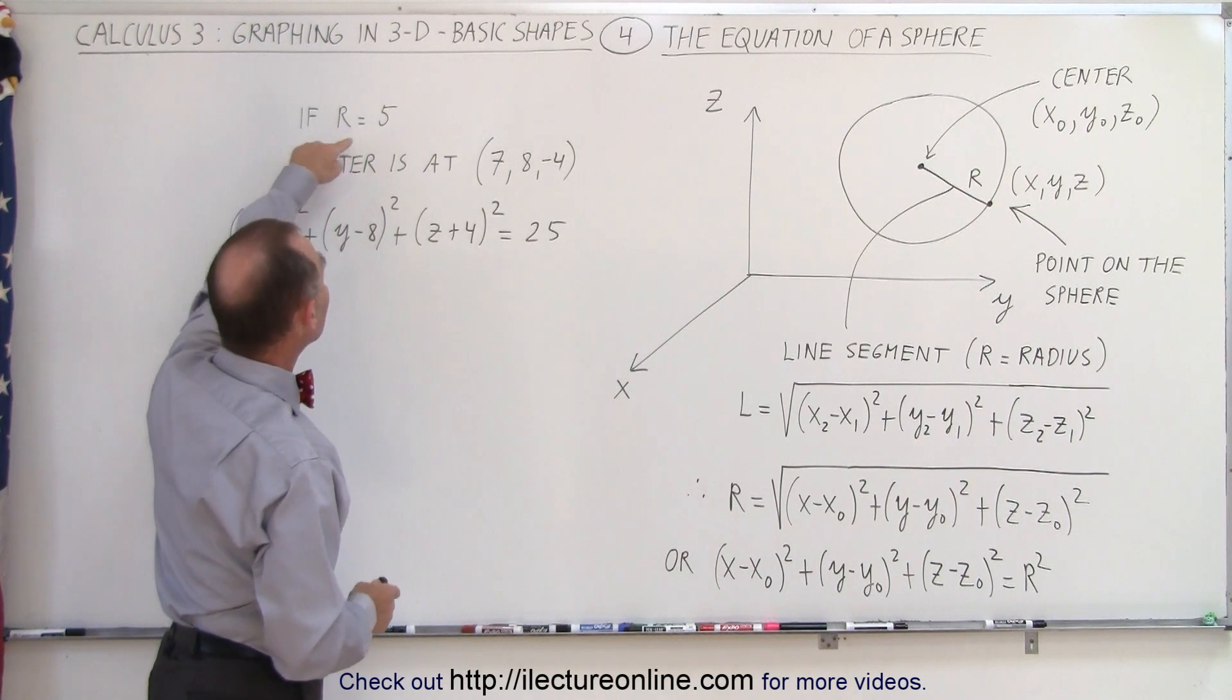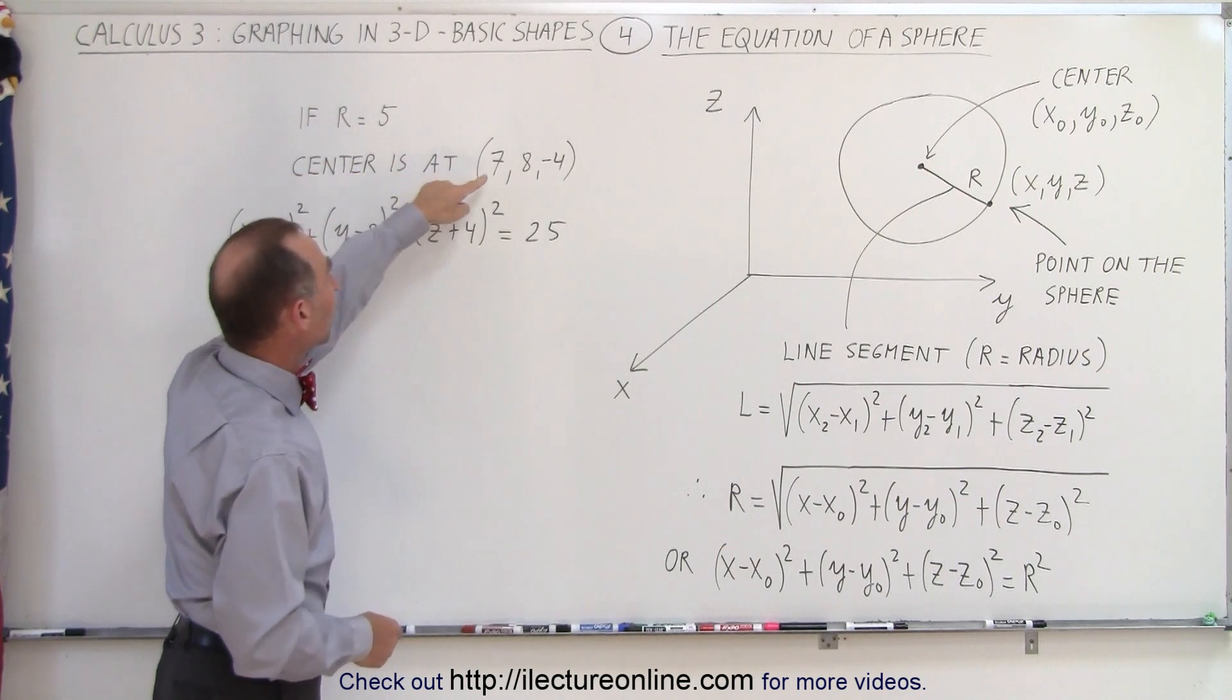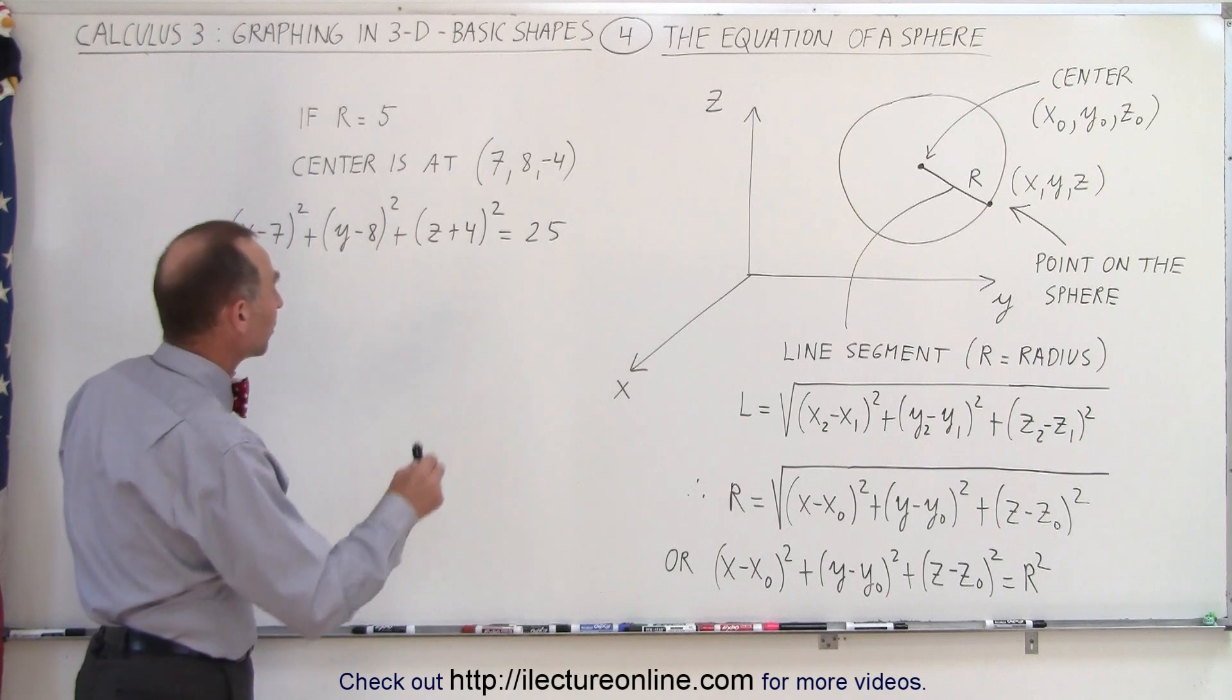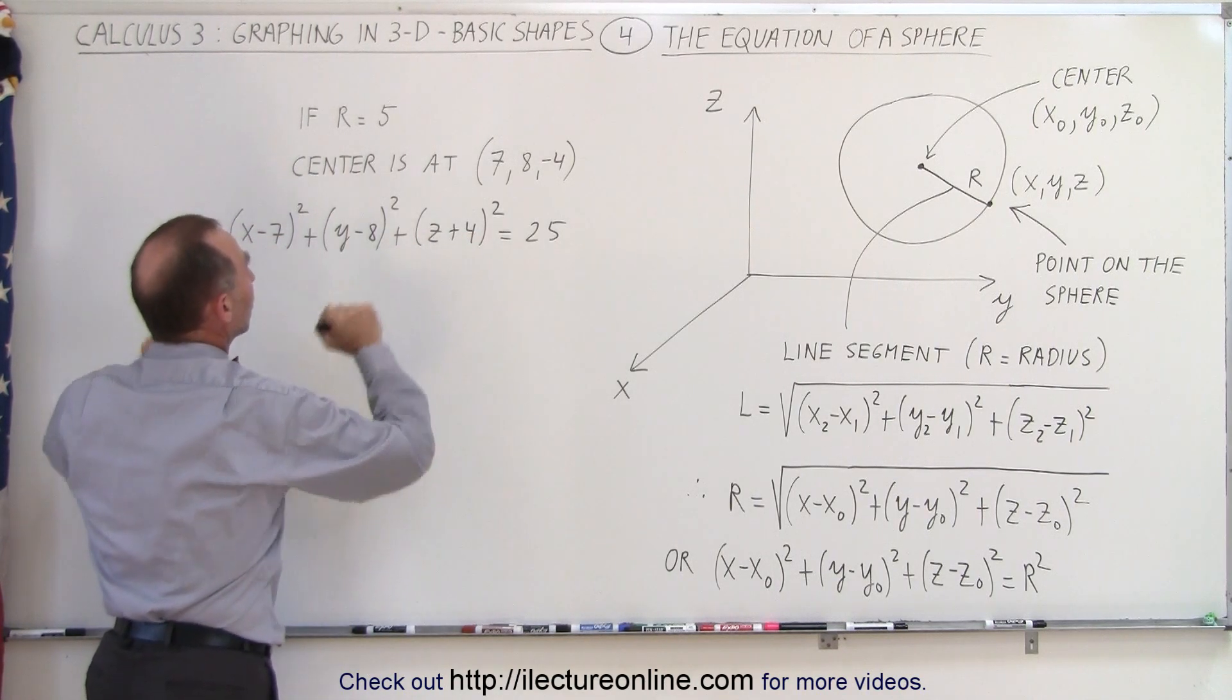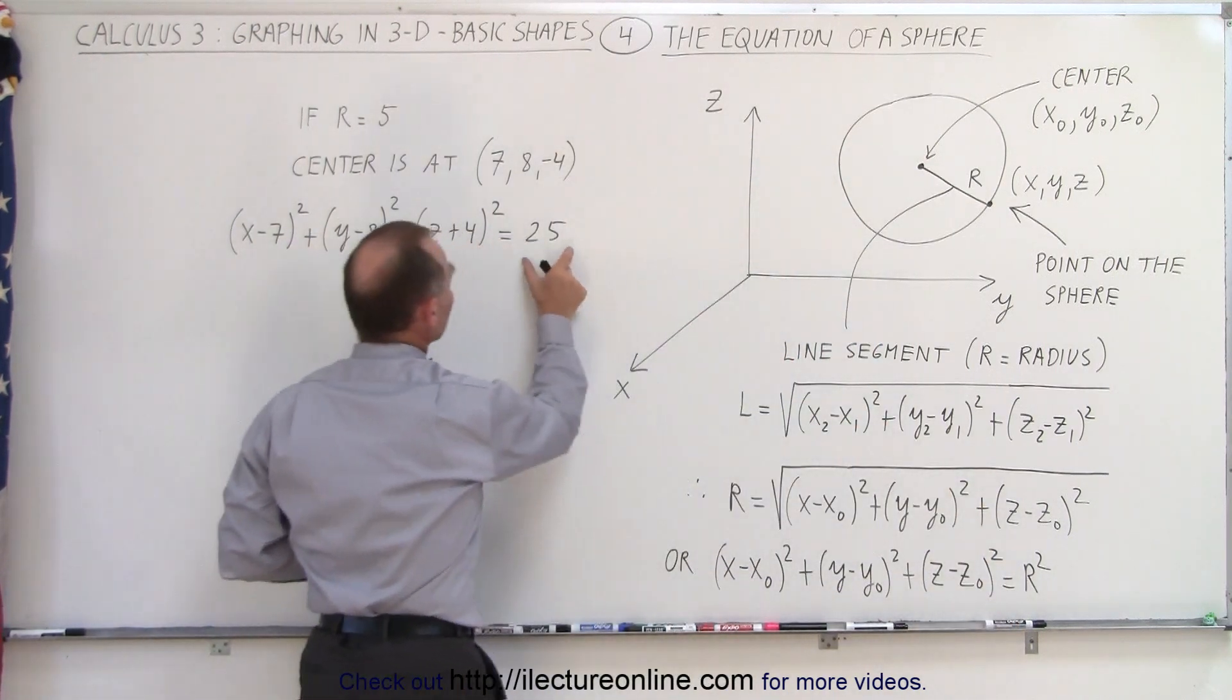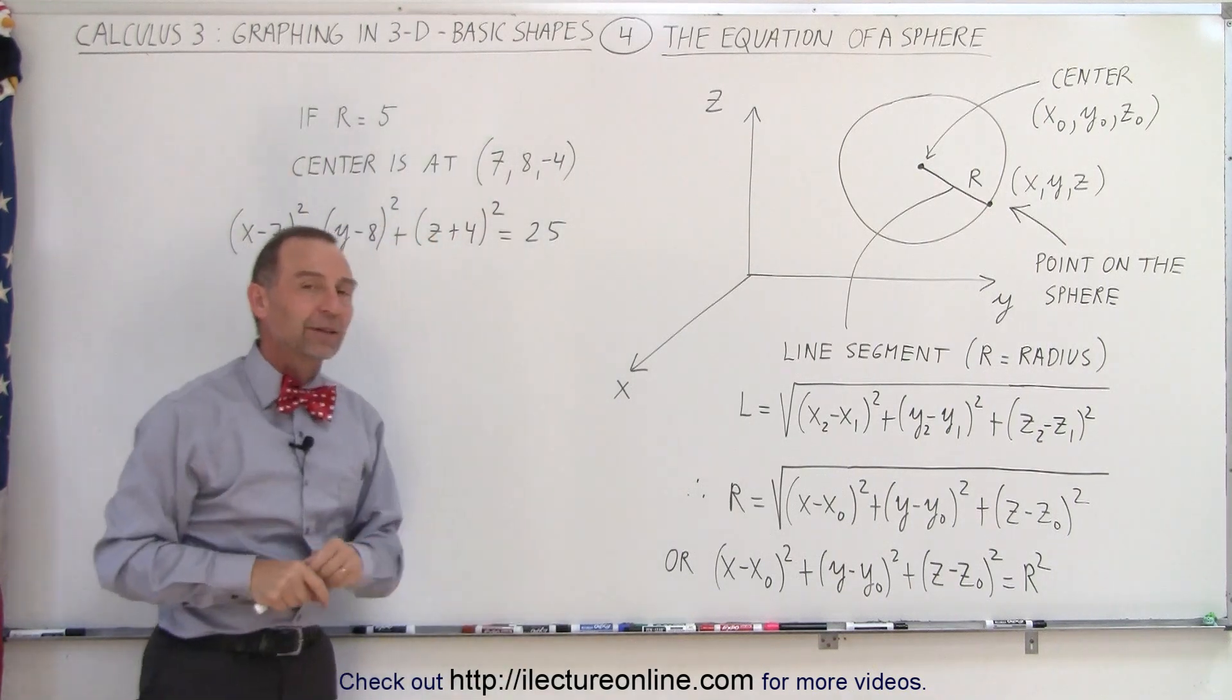As an example, if the radius is 5 and the center is located at 7, 8, and negative 4, to find the equation we simply plug the x, y, and z coordinates of the center into the equation, and then we take the radius squared on the other side of the equal sign, and that will give us the equation of that particular sphere.